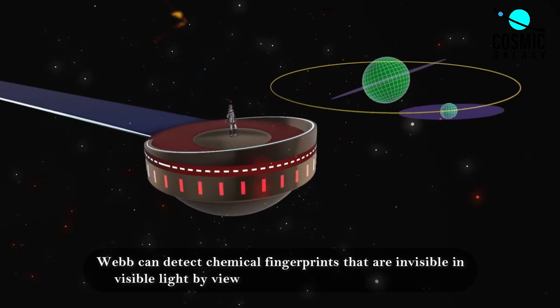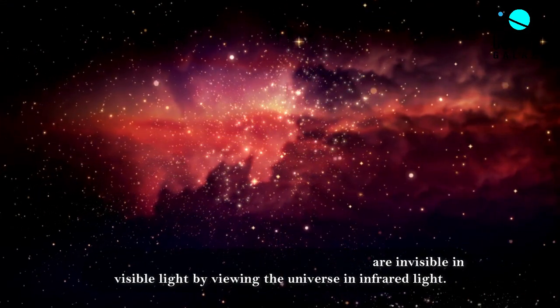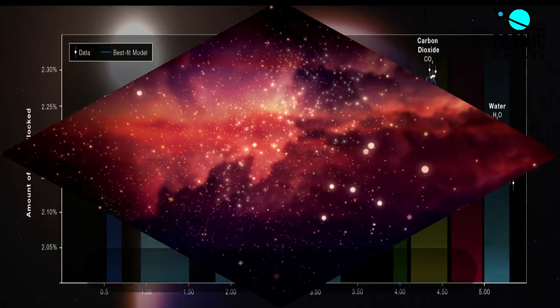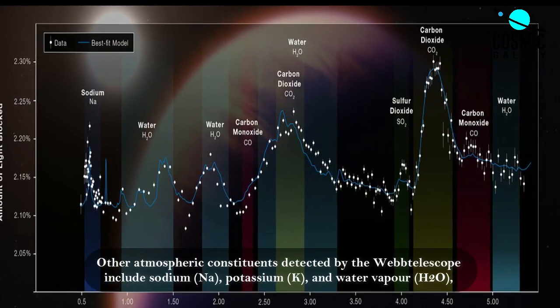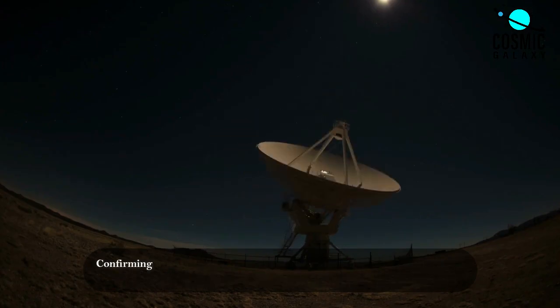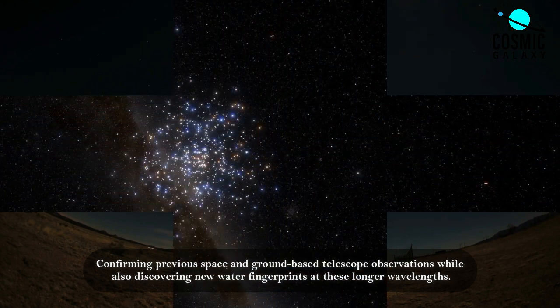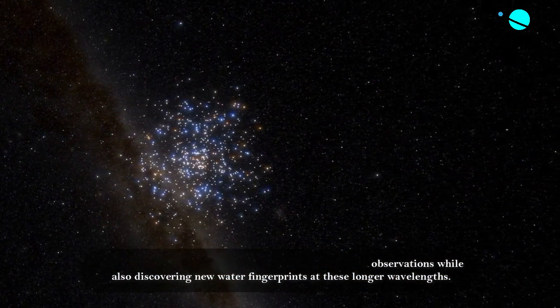Webb can detect chemical fingerprints that are invisible in visible light by viewing the universe in infrared light. Other atmospheric constituents detected by the Webb telescope include sodium, potassium, and water vapor, confirming previous space and ground-based telescopes' observations while also discovering new water fingerprints at these longer wavelengths.